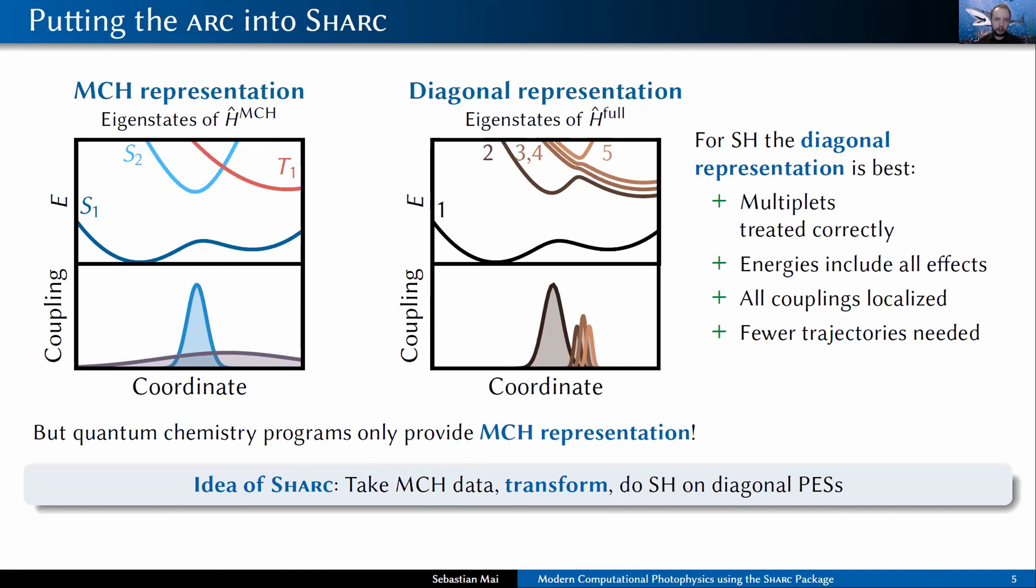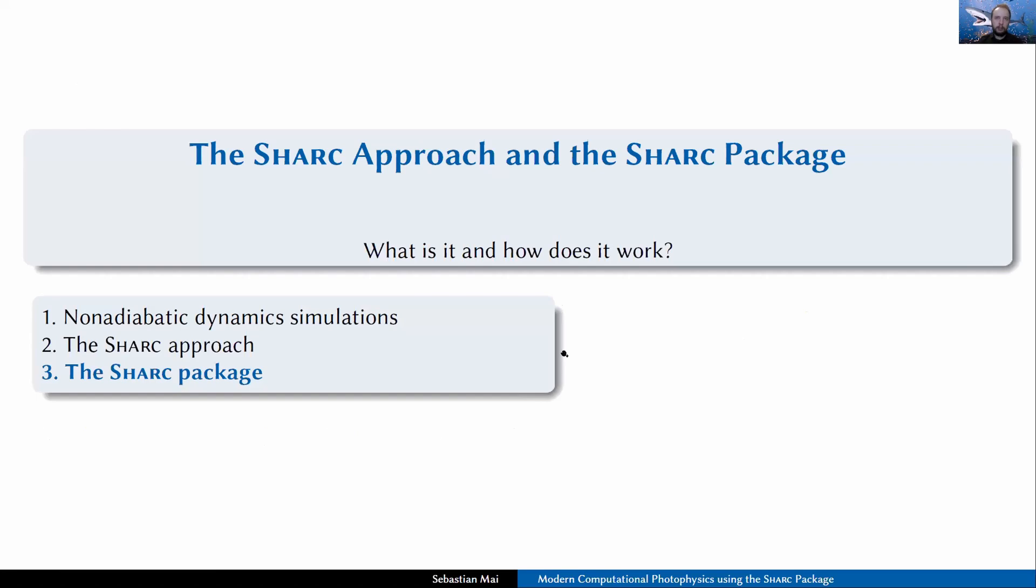That's why the idea of SHARC in general is that we take this MCH data, we perform an on-the-fly adiabatization to go into the diagonal representation, we transform all the data that is required, and then we do surface hopping on this diagonal potential. So this is the SHARC approach, the SHARC method.